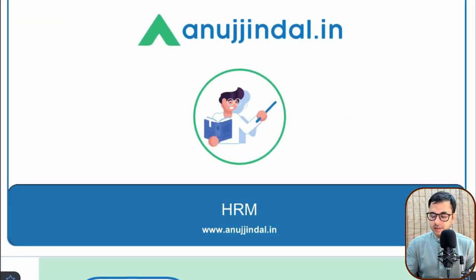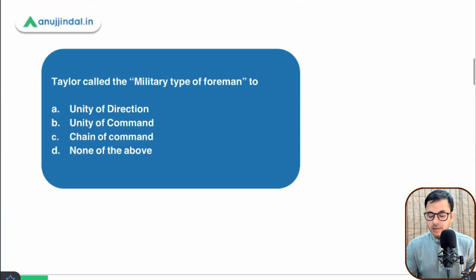Let's start with the session. Here we have the session for today on Human Resource Management. The first question says: Taylor called the 'military type of foreman' to—Unity of Direction, Unity of Command, Chain of Command, or None of the Above. Now you might be wondering, the question grammatically is a little difficult to understand. I don't know what exactly the examiner is trying to ask here, but it has been seen in the past that these kinds of small factual questions are often grammatically incorrect. Taylor called military type of foreman feature—which principle is it available in?